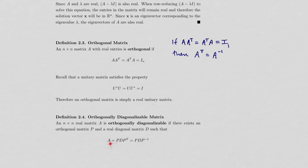Normally when diagonalizing A we factor it as PDP⁻¹. Since for an orthogonal matrix P⁻¹ = Pᵀ, which is simpler to compute than the matrix inverse, we generally write A = PDPᵀ when orthogonally diagonalizing A.